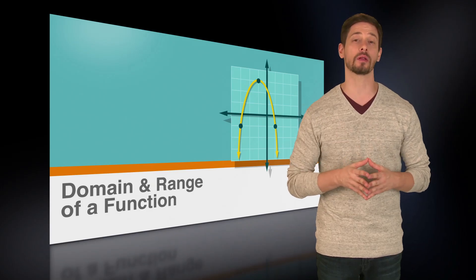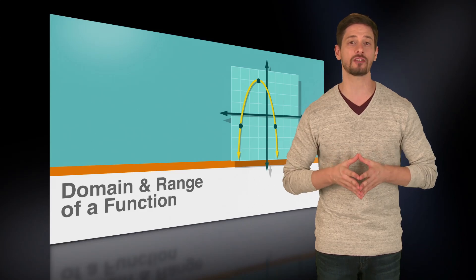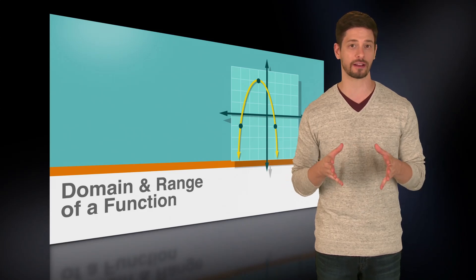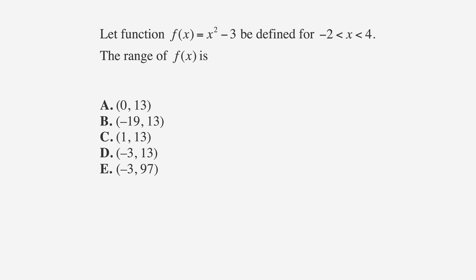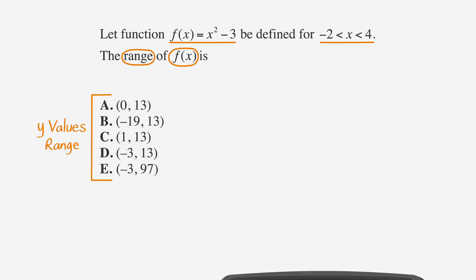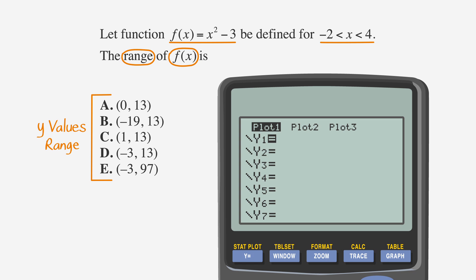Let's look at an ACT problem that asks us to find the range of a quadratic function. Let function f(x) equals x squared minus 3 be defined for negative 2 less than x less than 4. The range of f(x) is... The answer choices represent the possible range of y values. As always, we'll underline the facts, circle the keywords, and label the answer choices. Let's input this equation into our graphing calculator into Y1.